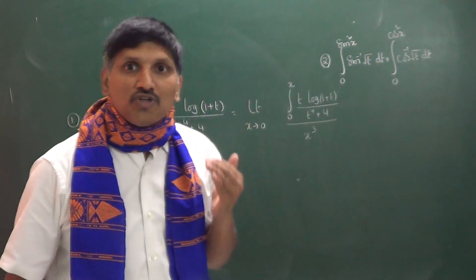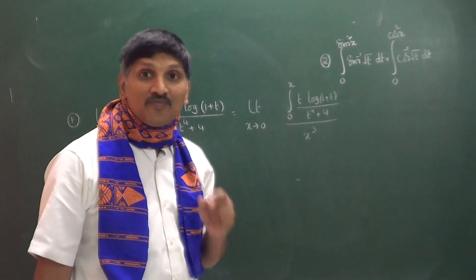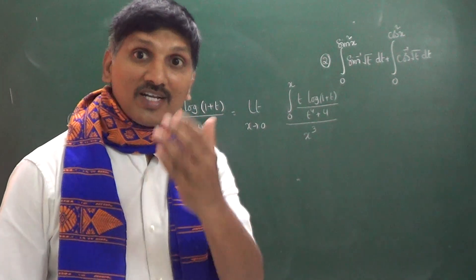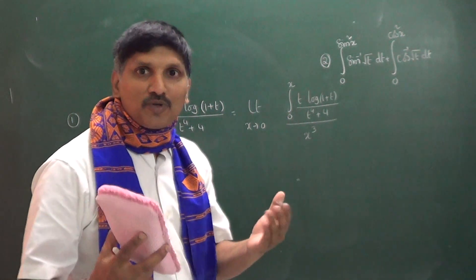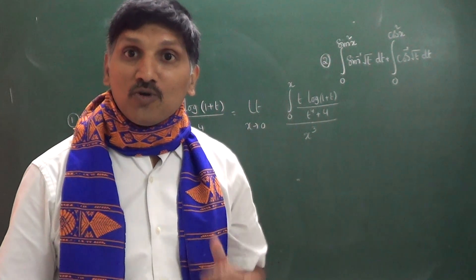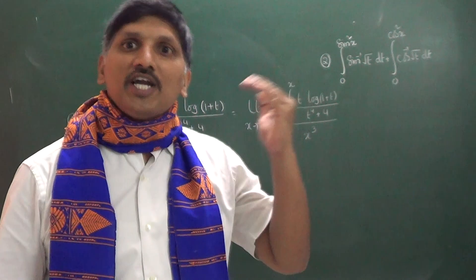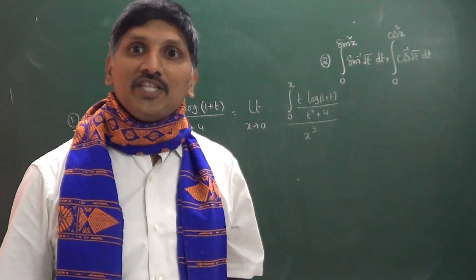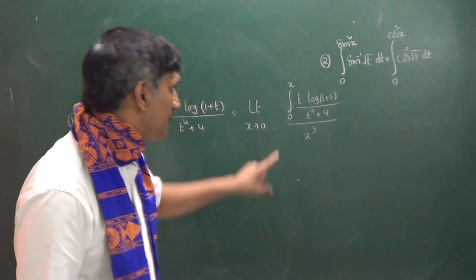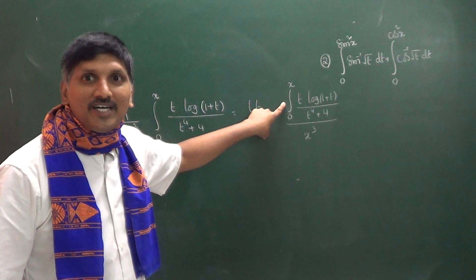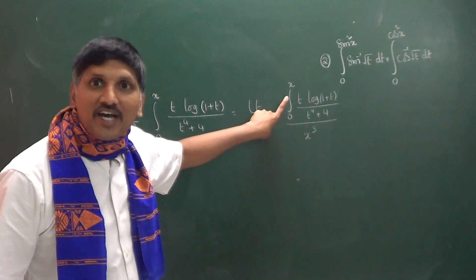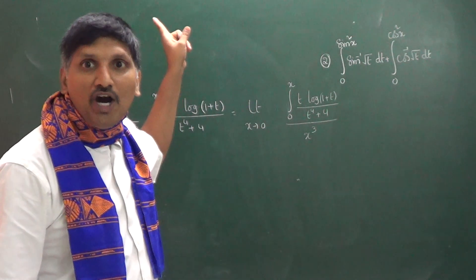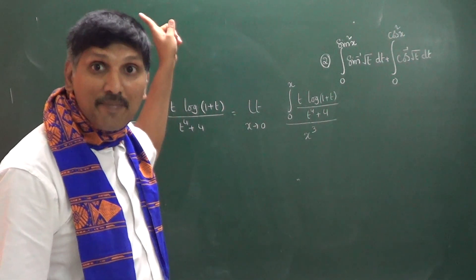Whenever we get a 0/0 form, we can apply L'Hôpital's rule. So let us apply L'Hôpital's rule. To proceed, we differentiate the numerator and differentiate the denominator. When differentiating the numerator, we have to apply the Leibniz rule.